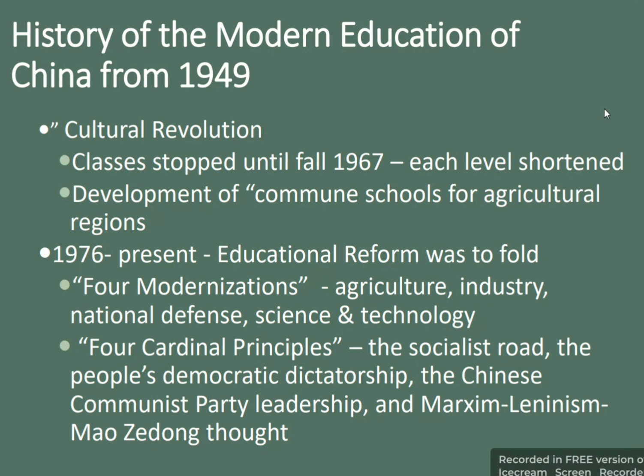During the Cultural Revolution, classes stopped until fall 1967, with each level shortened and community schools developed for agricultural regions. From 1976 to the present, education reforms unfolded the four modernizations: agriculture, industry, national defense, and science and technology. The four cardinal principles were the socialist road, the people's democratic dictatorship, the Chinese Communist Party leadership, and Marxism-Leninism and Mao Zedong Thought.